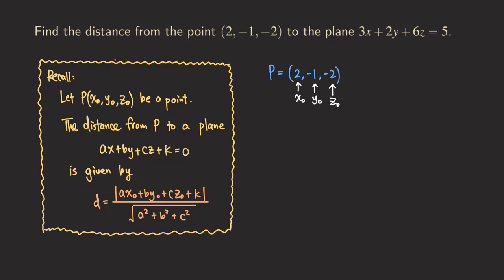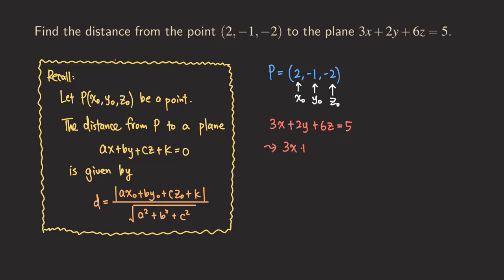Now what about the plane? We are going to rewrite this plane so that it's in standard form, so that on the right side of the equation there is a zero. We need to do something to this equation so that we have a zero on the right side. So we start with three X plus two Y plus six Z equals five, and then subtract five from both sides to get three X plus two Y plus six Z minus five equals zero.